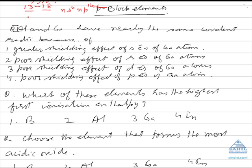Atomic size increases down the group, ionization energy decreases down the group, electronegativity decreases down the group. Basic character of the oxide increases down the group, while acidic character of the oxide decreases down the group.